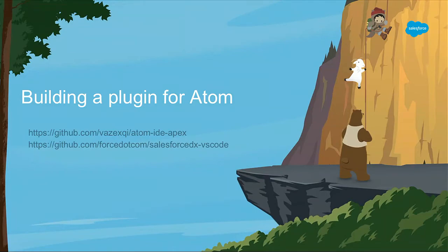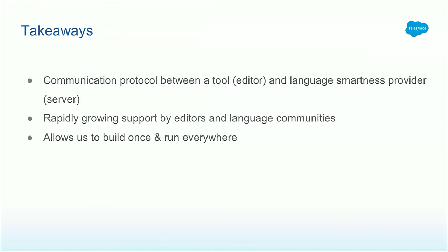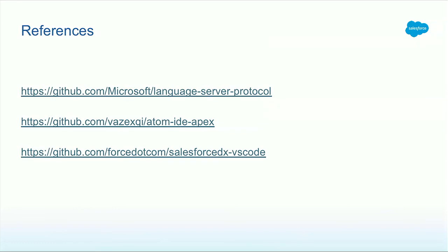So the takeaway is this: this is a communication protocol between your tool - in this case an editor - and the language smartness features. It's a protocol that's rapidly growing in support across languages and editors, and it allows you to build it once and reuse it everywhere. I'm going to publish these slides on the Agenda Builder. If you want to look at the resources: this is the language server specification, the code I just demoed is on GitHub so you can clone it and use the Atom plugin, and the last link is where I got the language server and syntax highlighting files - the VS Code extensions we're shipping, which are completely open source.